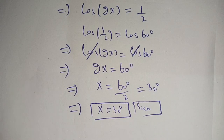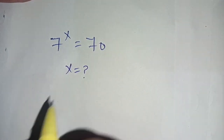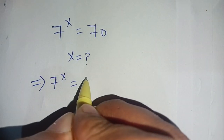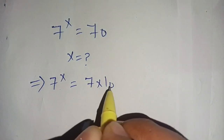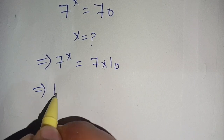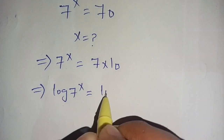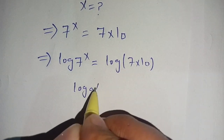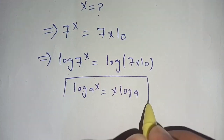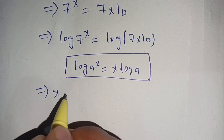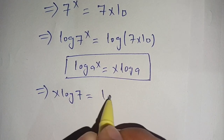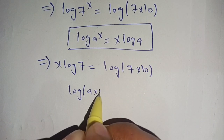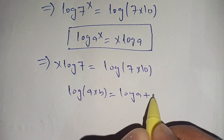If you're new here, make sure to subscribe to our channel for more informative videos. Now, x = 70 and we have to find the value of x which satisfies this exponential equation. Let us solve this. We can write it as 7^x = 70. Since 70 = 7 × 10, in the next step we take log on both sides: log(7^x) = log(7 × 10).